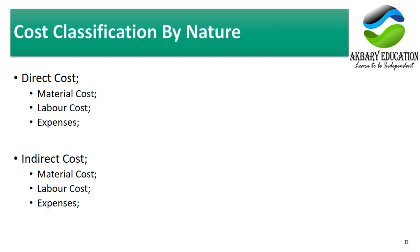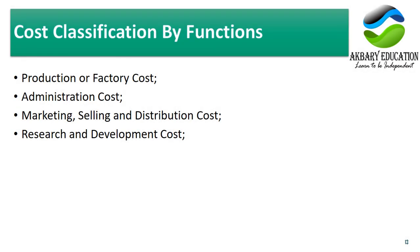Cost classification by function divides costs into several categories: production or factory cost — costs incurred in the factory; administration cost — costs incurred in the admin or operations side of the business; selling, marketing, and distribution cost — costs incurred for marketing and distributing products to other territories; and research and development cost — costs incurred to develop inventions, increase product quality or capacity, or decrease product cost.